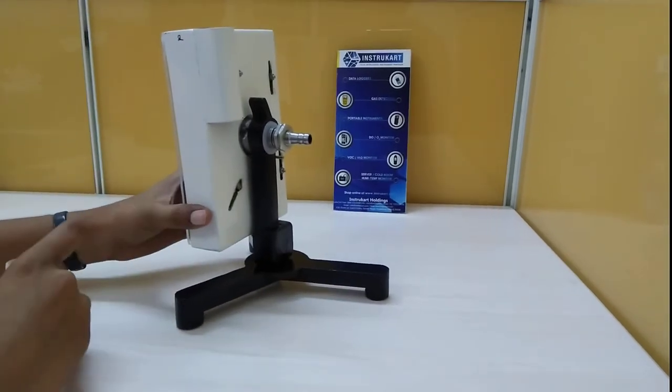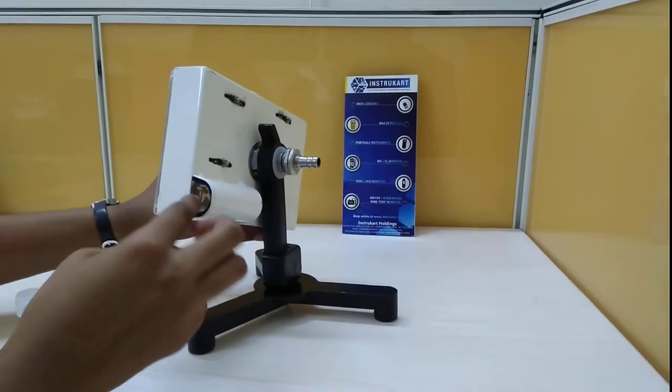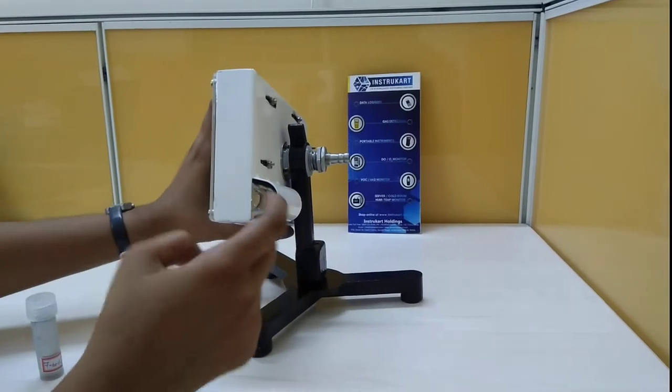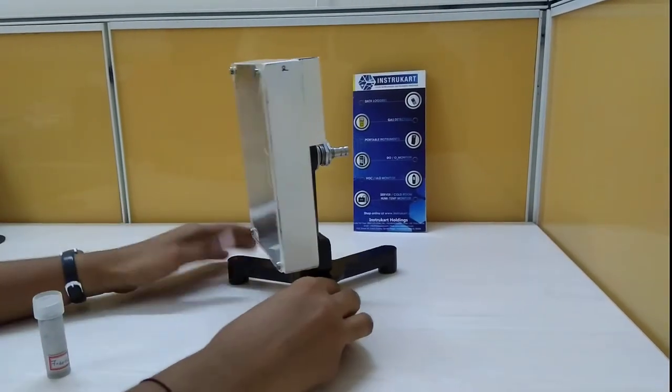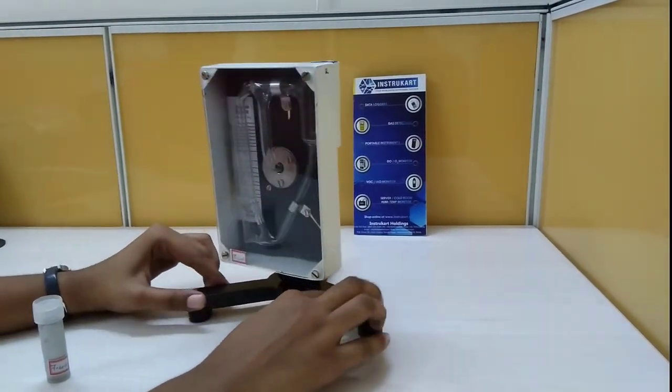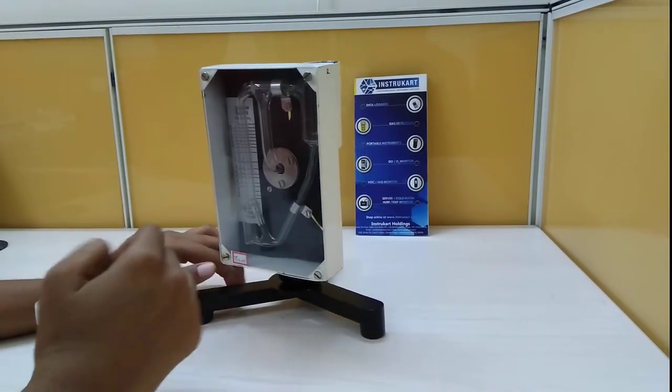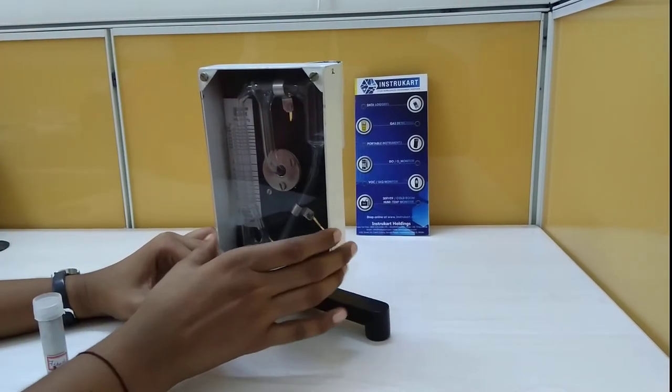The mercury is filled through a hole inside this. A calibration certificate is provided along with this instrument, and as it is made of glass...